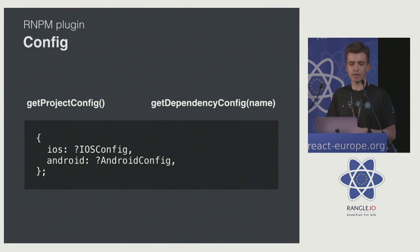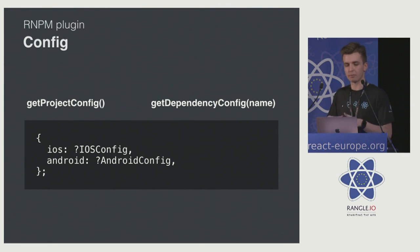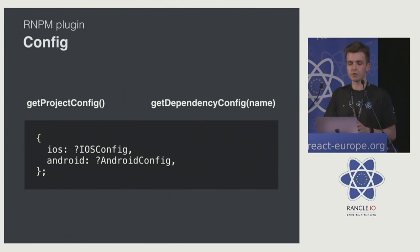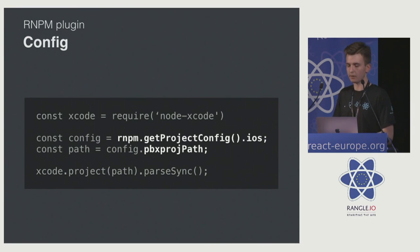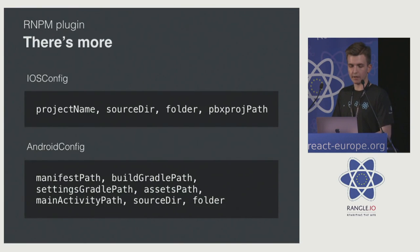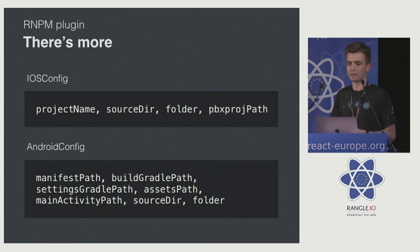In regards to the RMPM variable your function receives, it has two functions: getProjectConfig and getDependencyConfig. The most important thing we wanted to support was making it easy to work with any project, any structure, any kind of files in a convenient way. These two functions return an object containing iOS and Android properties. If either is missing, it means the current project doesn't have that platform's code. You can console log the iOS part and see properties like project name, sourceDir, and xcodeProjectPath. The Android config has Android-specific properties you can use to build your project or do whatever you need.